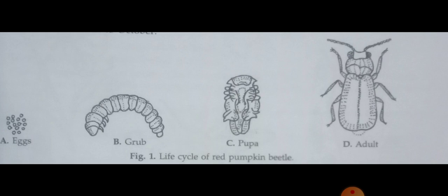The host plants, the main hosts are cucurbits like pumpkin, cucumber, ghiya, tori, gerd, tinda, etc. These are the host plants for this red pumpkin beetle.